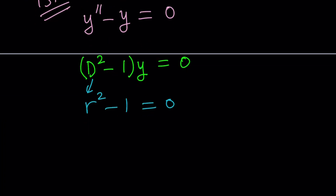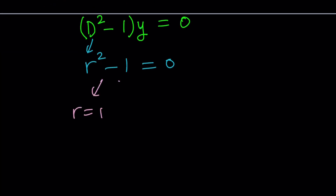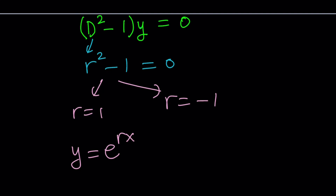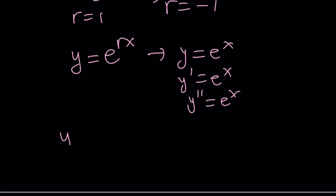We're going to solve for r. Solving r squared minus 1 equals 0 gives us r equals 1 and r equals negative 1. This means y equals e to the power rx is a solution. For example, if r equals 1, then y equals e to the x. The first derivative is e to the x, the second derivative is e to the x. So y double prime minus y gives e to the x minus e to the x, which is 0.